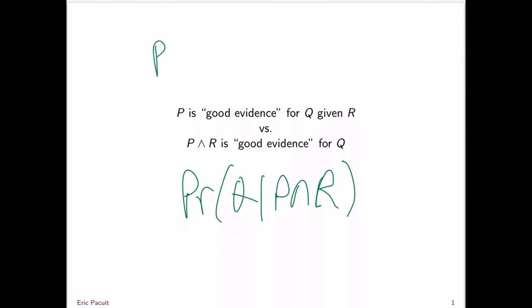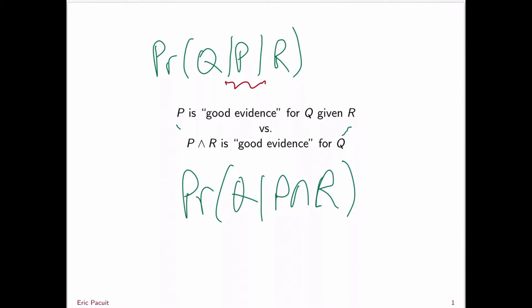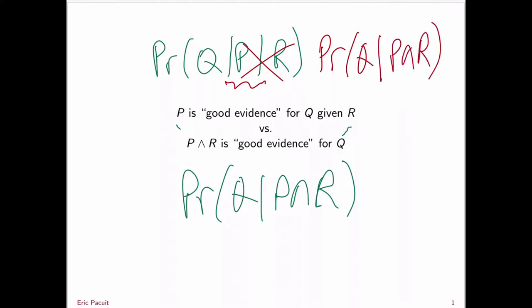But what about the statement 'P is good evidence for Q given R'? Well, it seems like what we're trying to do is to say: look at the probability of Q given P, but we're also conditioning on R. So it looks like we want the probability of Q given P, given that we're assuming R. But of course, you can't condition twice — or said differently, conditioning twice really just is the probability of Q given P and R. So on the face of it, 'P being good evidence for Q given R' is just another way of saying 'P and R is good evidence for Q.'